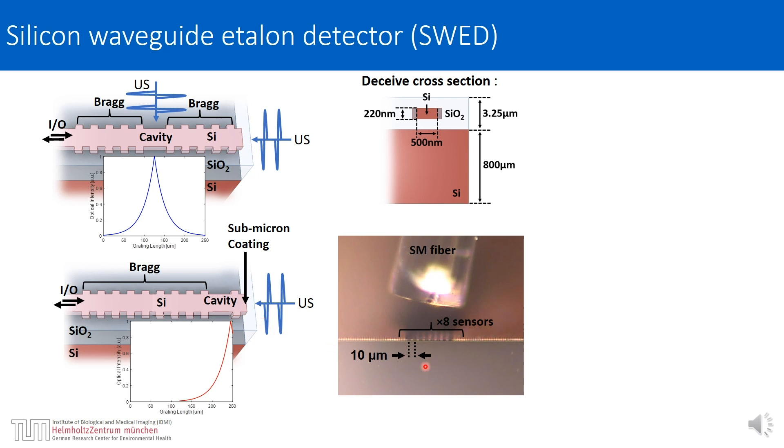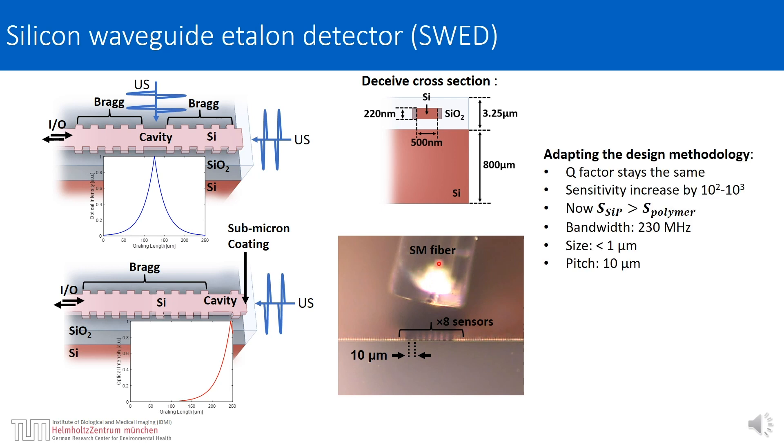We realized an array of eight such sensors with a pitch of 10 microns, and you can see that already all of this array is smaller than a single optical fiber. We were able to increase the sensitivity of this device by several orders of magnitude over the embedded resonator.